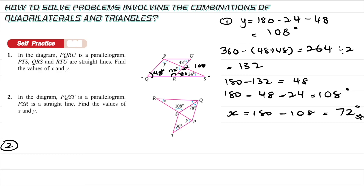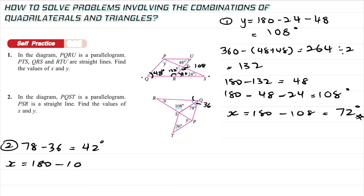Number two: PQST is a parallelogram. If this angle is 36, the opposite is also 36. The adjacent angle in the parallelogram: 78 − 36 = 42 degrees. RSQ is a triangle, so X = 180 − 108 − 42 = 30 degrees.